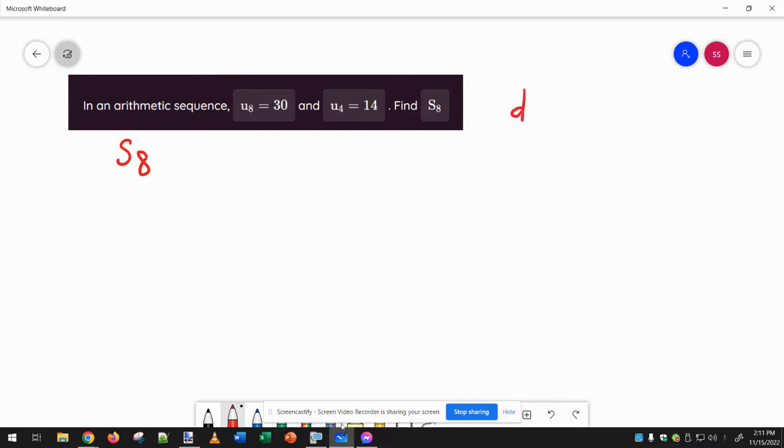So really, we need to figure out what the common difference is. So we can get those eight terms and add them up, or use maybe a formula like this one where we need to know the first term and the nth term, or maybe the one where we do two times the first term plus d times n minus one. So either one of these.